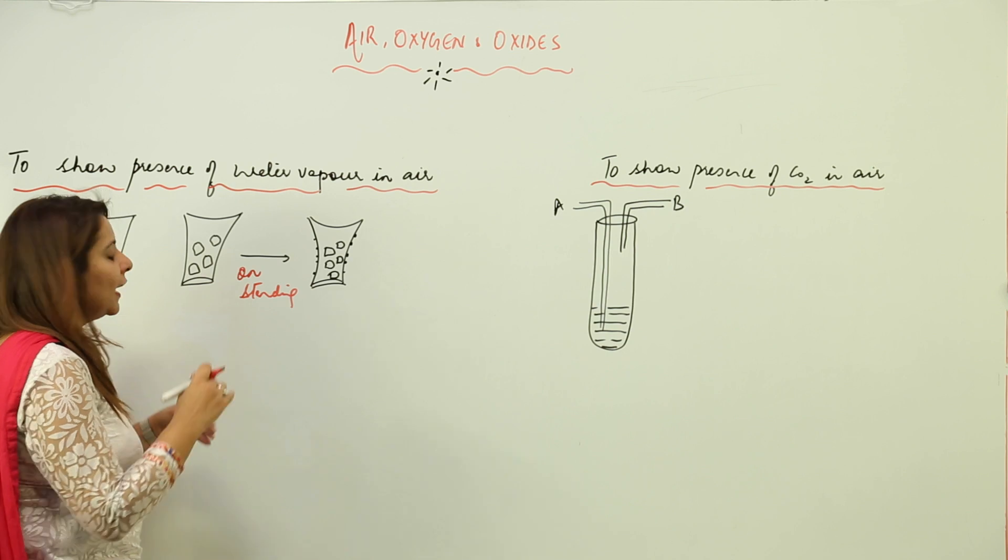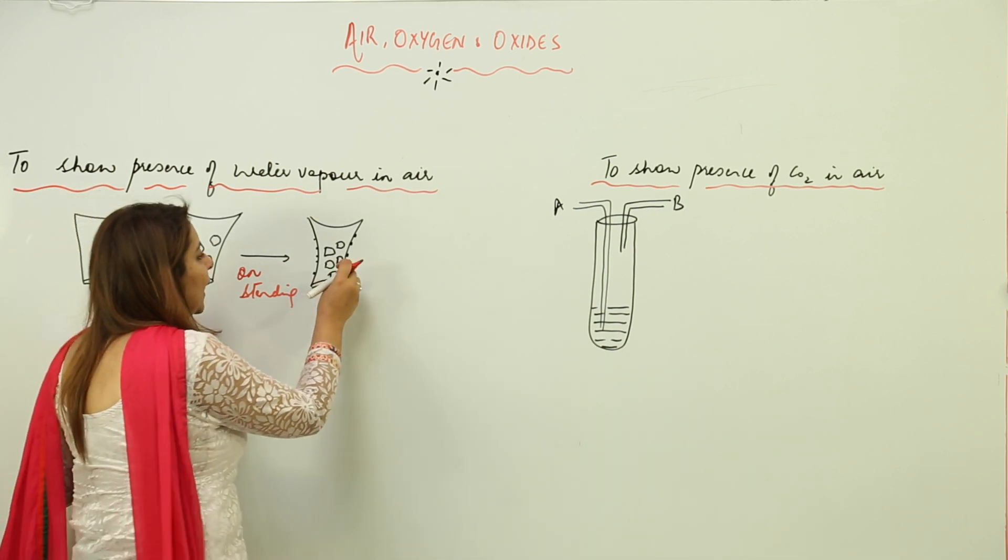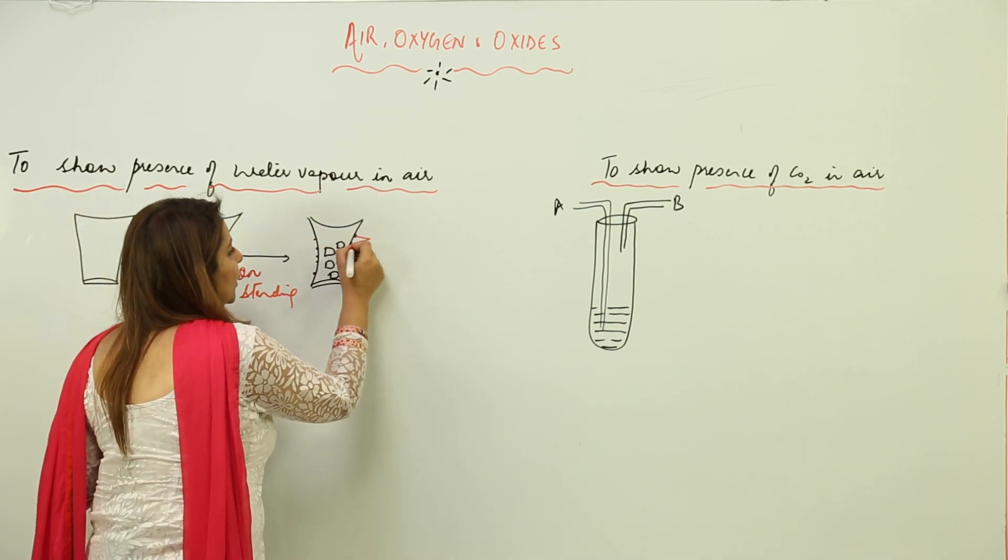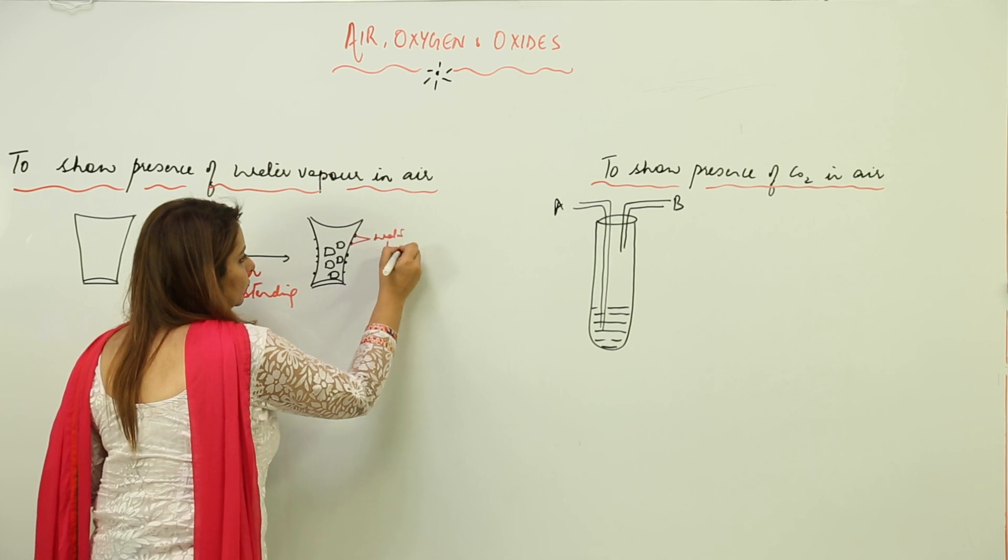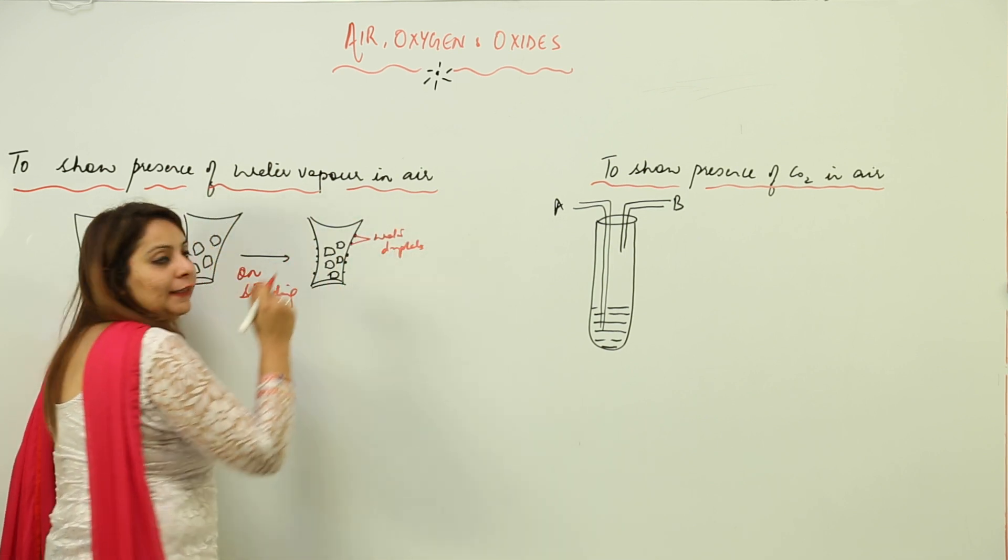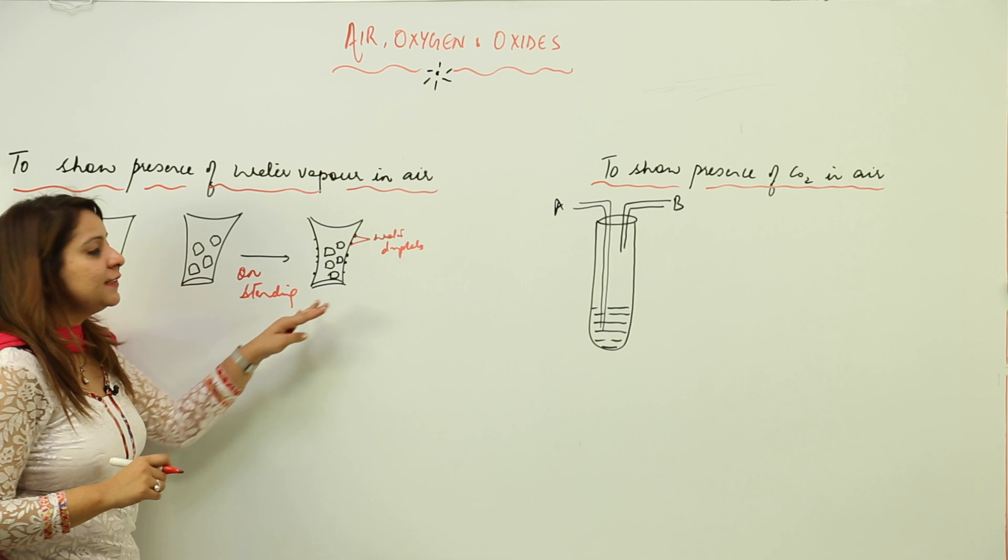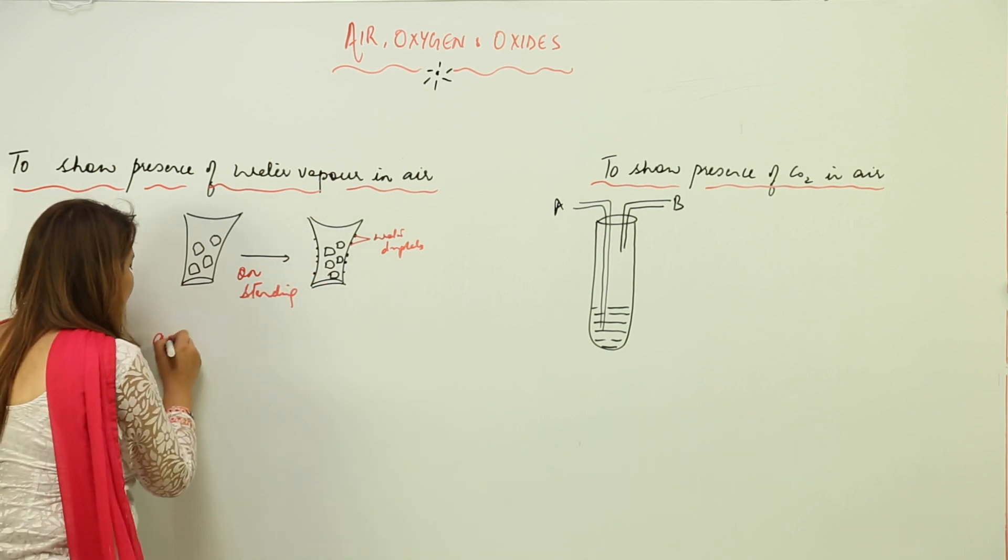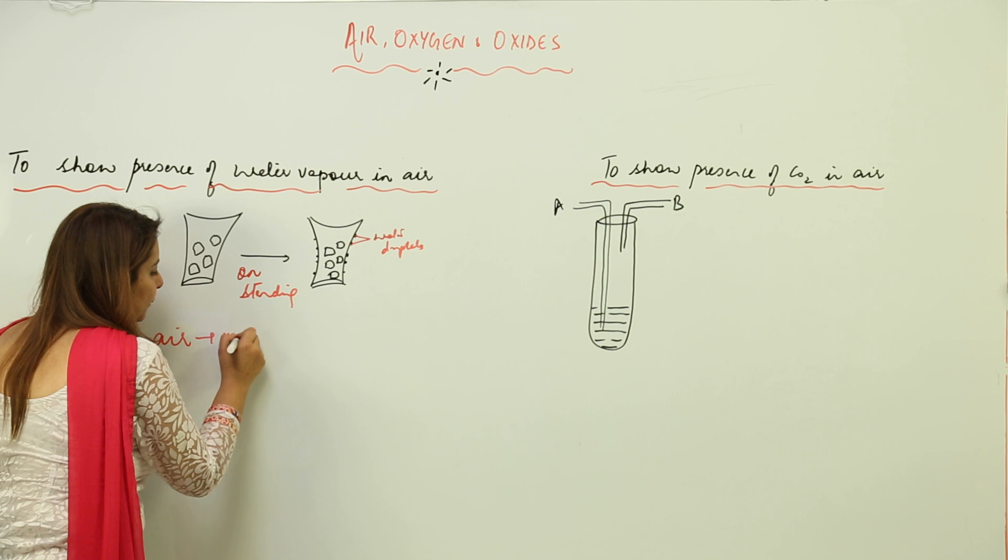What I'll see is that after some time there are tiny droplets of water which are seen on the glass. This actually shows that air contains vapor.